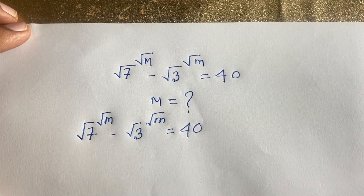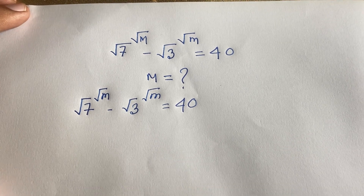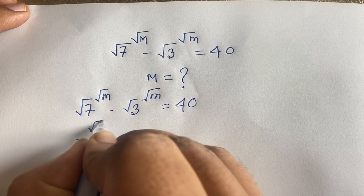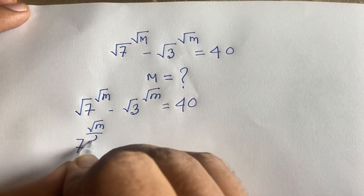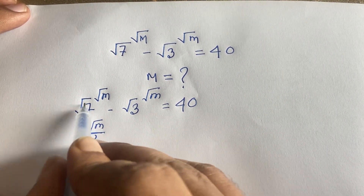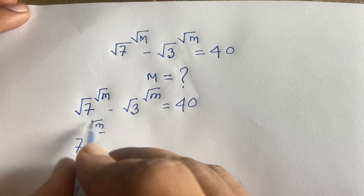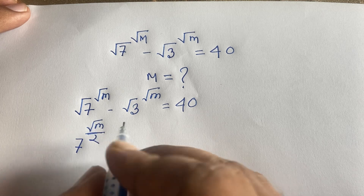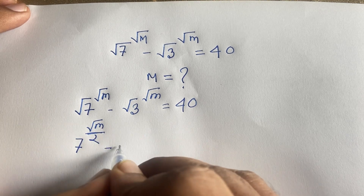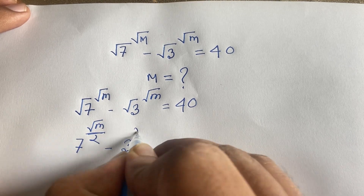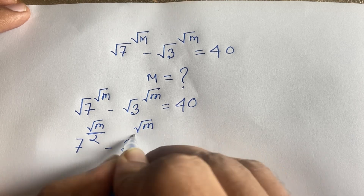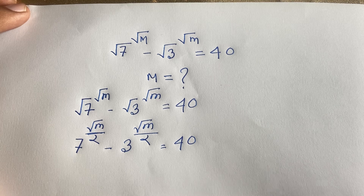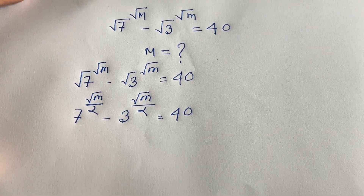In this expression, I can rewrite square root of 7 as 7 to the power 1 over 2. So the whole term becomes 7 to the power square root of m over 2. Similarly, square root of 3 becomes 3 to the power square root of m over 2. So the equation is: 7^(√m/2) minus 3^(√m/2) equals 40.